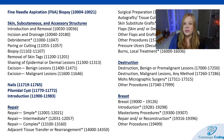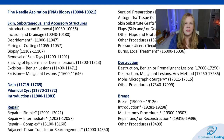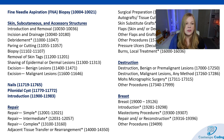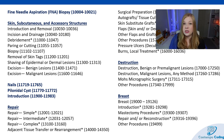Next, we have nail procedures — you might need to know how much of the nail was involved, and even how many nails were involved. Then we have pilonidal cysts, with three codes based off complexity: simple, extensive, or complicated. Introduction includes things like lesion injections, filler injections, placement of tissue expanders, even tattooing — and those are based off of square centimeters.